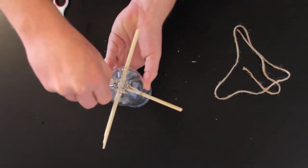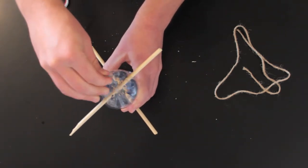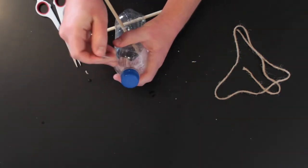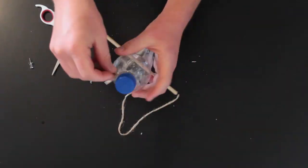Using the push pin, poke holes in the bottom of your bottle to allow any water to drain out. Finally, add holes at the top of your bottle for the string.